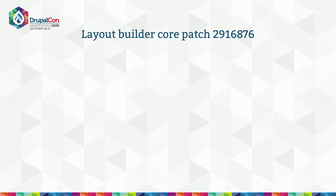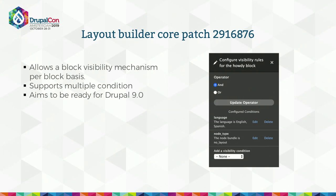The next thing I'd like to discuss is a layout builder core patch — something very similar to what we used to have with panelizer or panels. Within a particular layout, you can add visibility rules to specific blocks, so you can define based on a user role whether to show or hide a particular block. This patch is currently ready for review, so it needs your help — go there, test it, and pretty soon we can have it in Drupal 9.